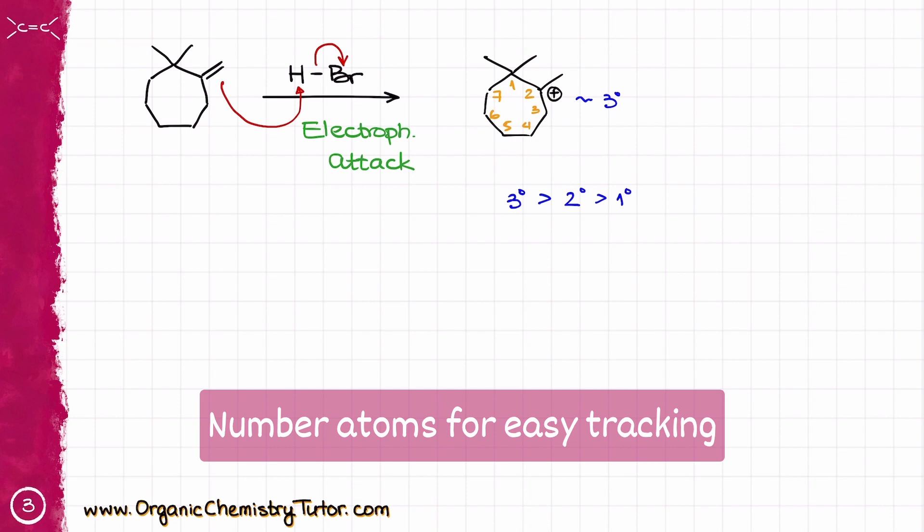What if somehow this ring undergoes a contraction and gives me a 6-membered ring with a tertiary carbocation? That would actually be more stable than a 7-membered ring with a tertiary carbocation. We can actually accomplish it by taking electrons between carbons 1 and 7 and moving those electrons towards carbon number 2. Let me draw it ugly first.